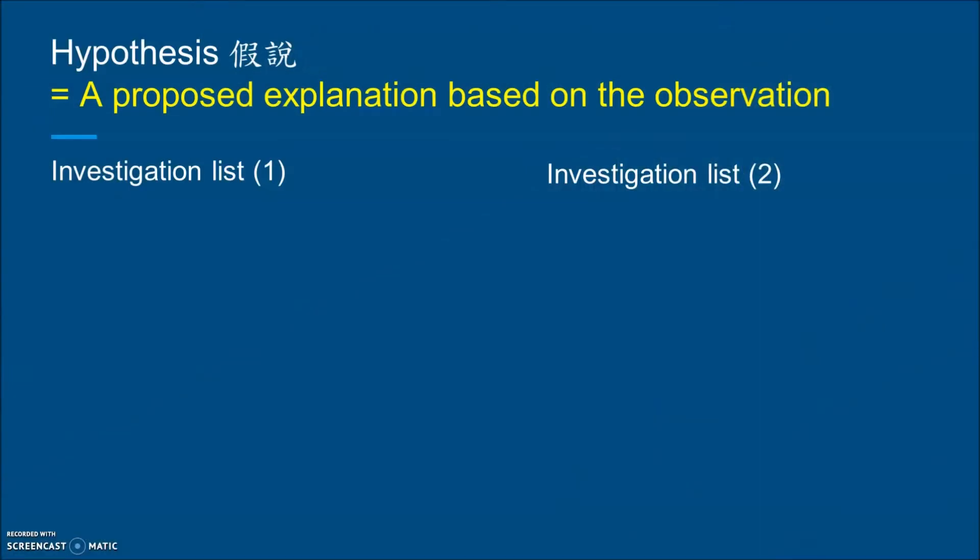In this part I'm going to talk about hypothesis. Hypothesis is the proposed explanation based on observation. After we make an observation on a biological phenomenon, we try to make an explanation — what is the reason behind it, or the relationship between something and something.